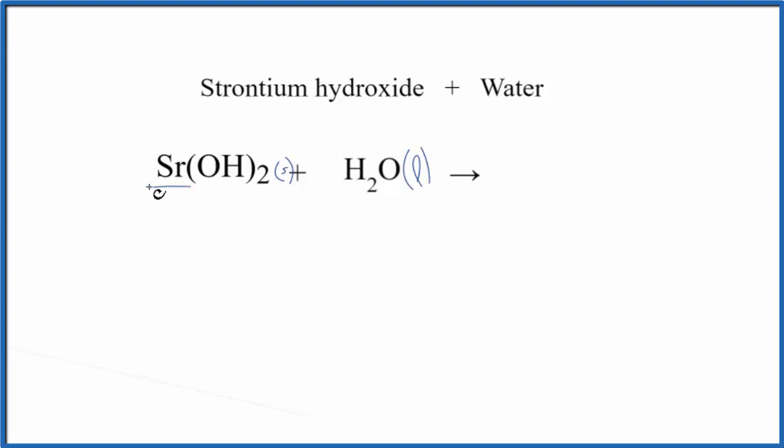So strontium hydroxide, when you have a metal and you see it with this OH, this is the hydroxide group, this is going to be a base. So when we put this in water, we would expect that it would dissociate into its ions, and we'd get strontium's in group two, so it'd be two plus, the whole hydroxide is always one minus.